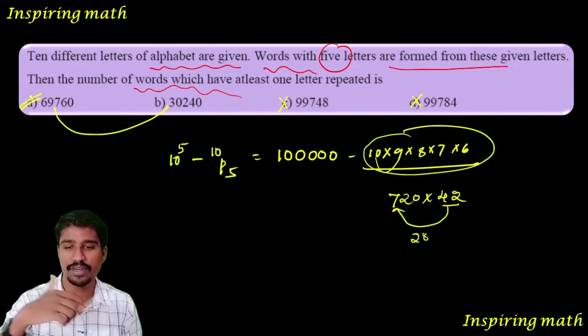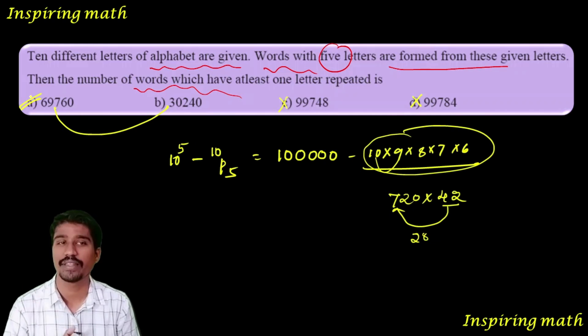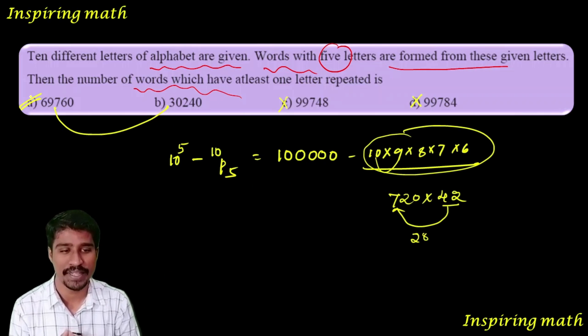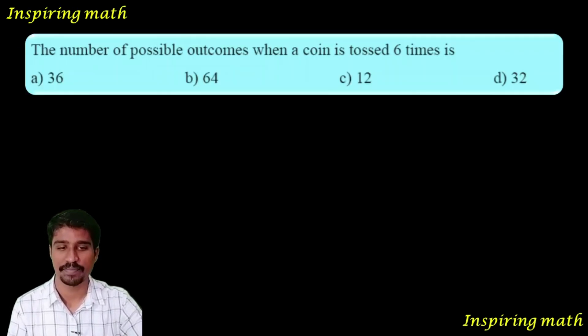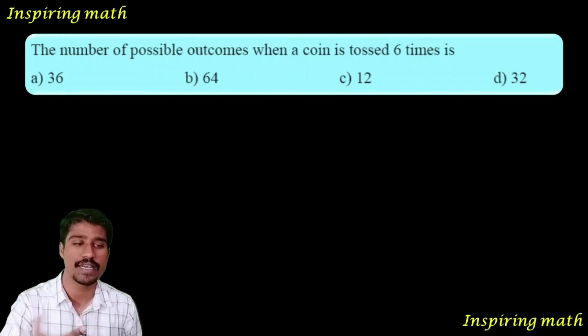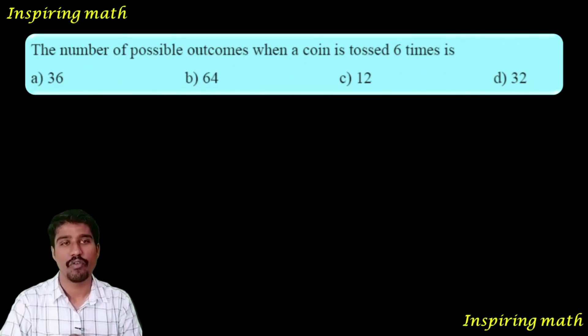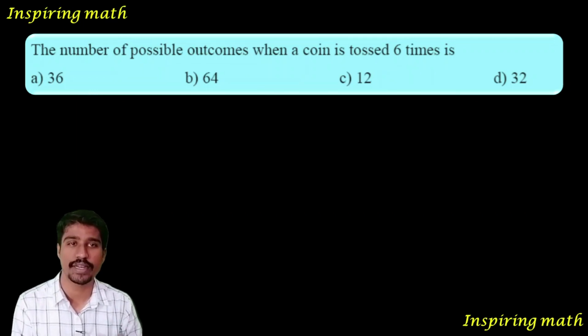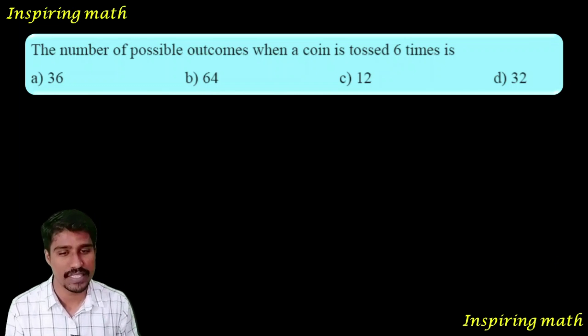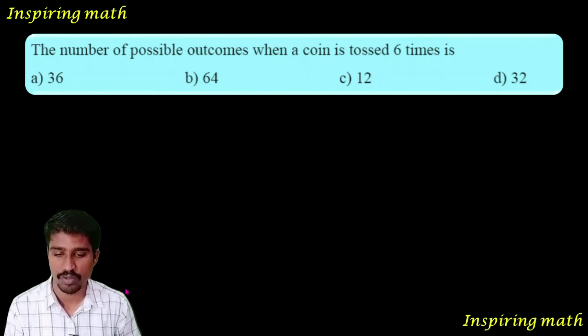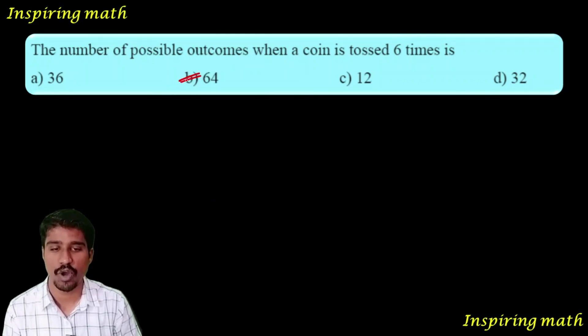The number of possible outcomes when a coin is tossed six times: one time gives 2 outcomes, two times gives 4, so 2 to the power 6 equals 64. Option B is your answer.